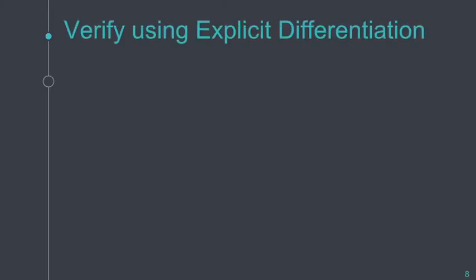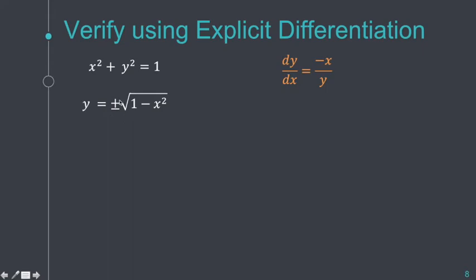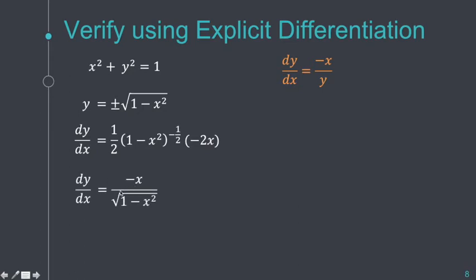Let's verify using explicit differentiation. We know the unit circle is not a function, but let's verify. For explicit differentiation, we make y the subject: y = ±√(1 − x²). Setting aside the ± for now, we differentiate: (1 − x²)^(1/2). The derivative is ½(1 − x²)^(−½) × (−2x), which simplifies to −x / √(1 − x²). Notice that √(1 − x²) is our y — so it's the same result.